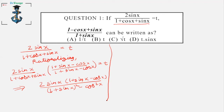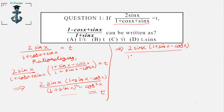We can expand on this. We know this equals t. So we get 2sinx·(1 + sinx - cosx) divided by 1 + sin²x + 2sinx - cos²x.